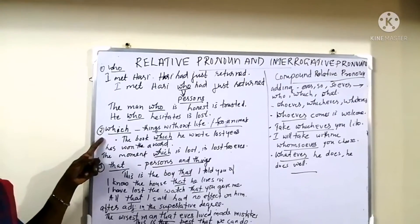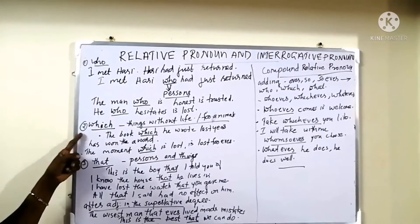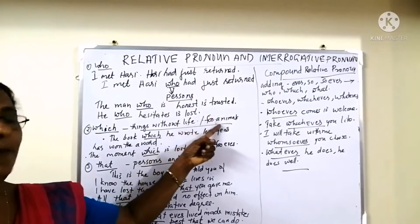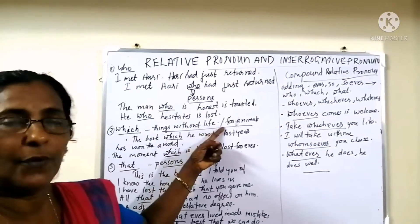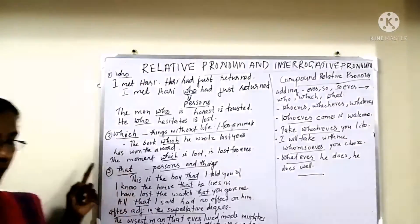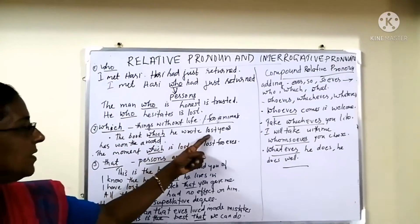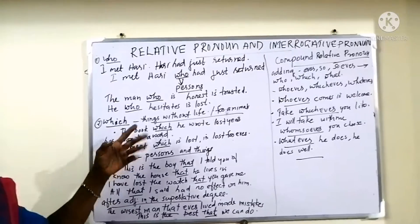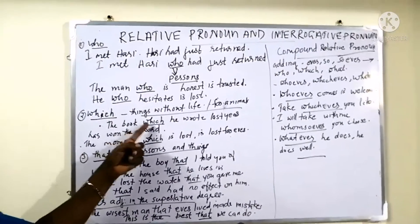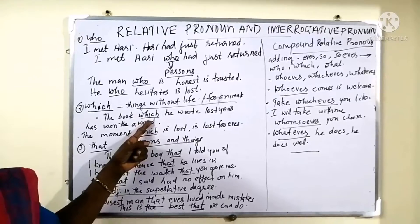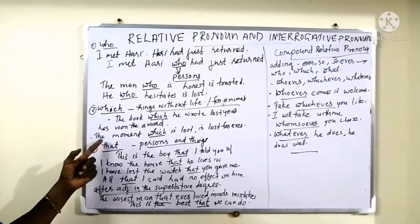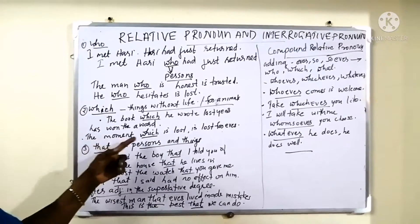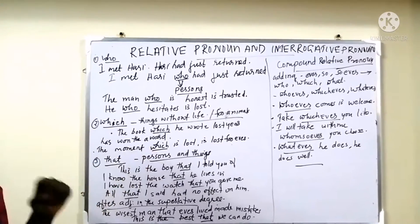The second relative pronoun is 'which.' 'Which' is used for things without life and for animals. For example: The book which he wrote last year has won the award. Here, 'which' refers to the book — a thing without life. Another example: The moment which he lost is lost forever. Here we use the relative pronoun 'which.'